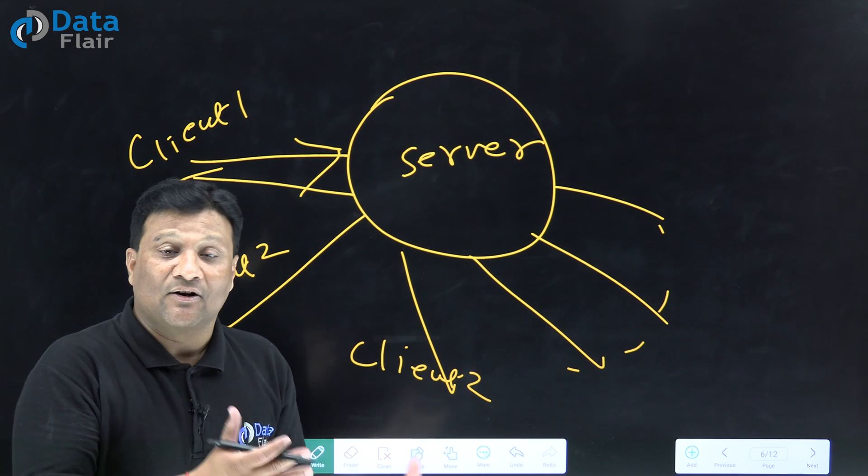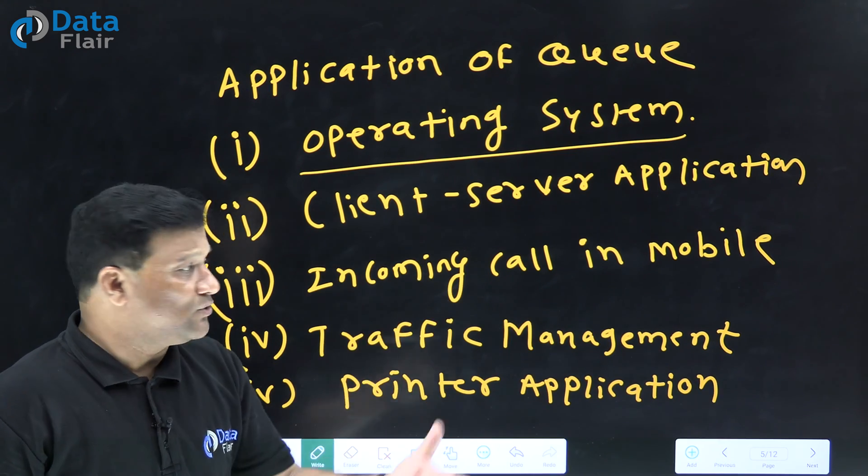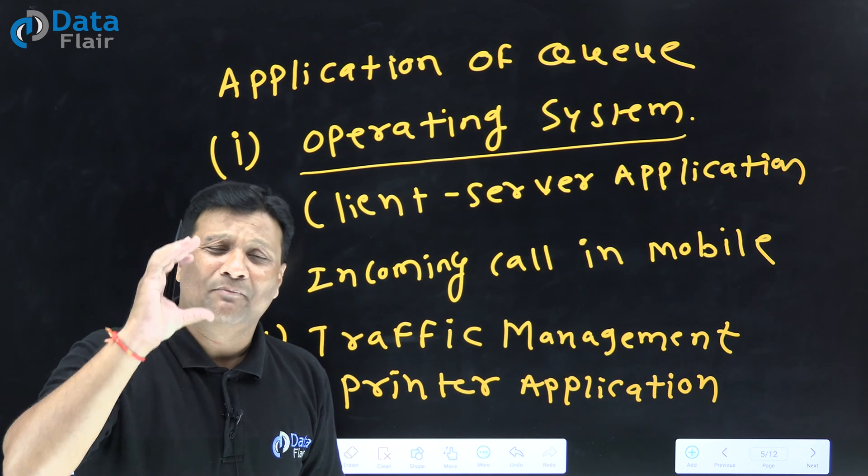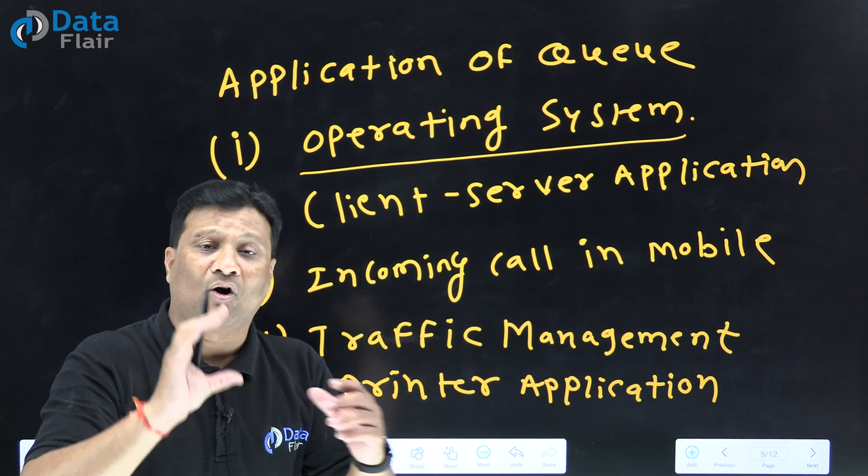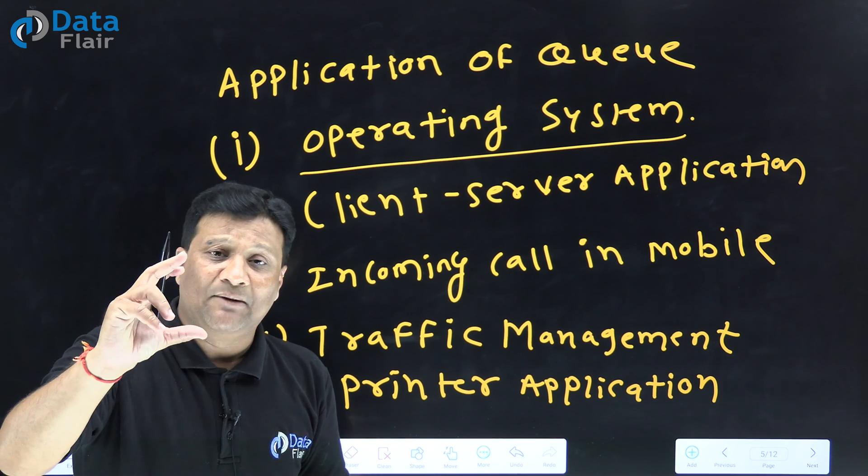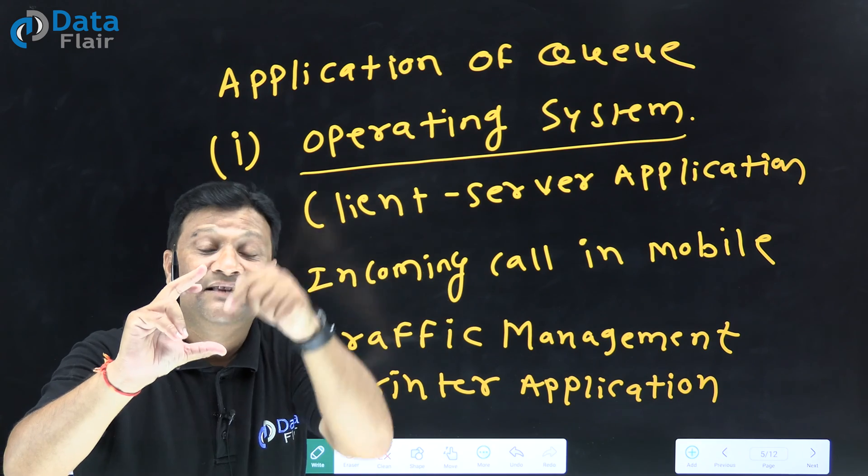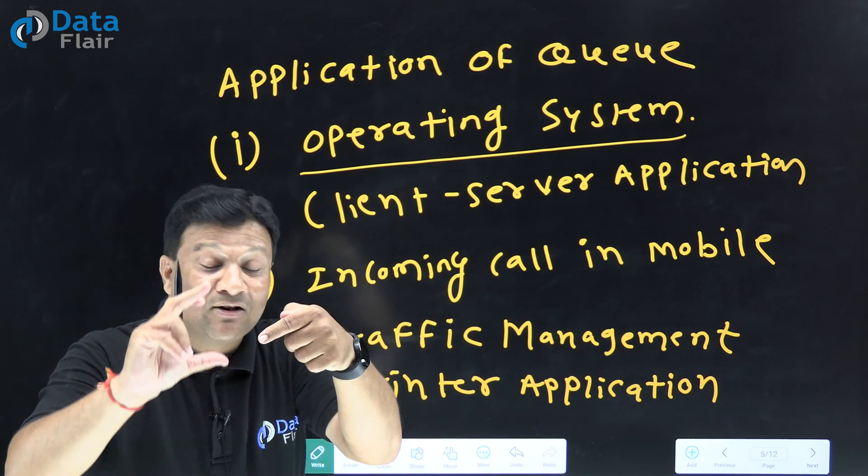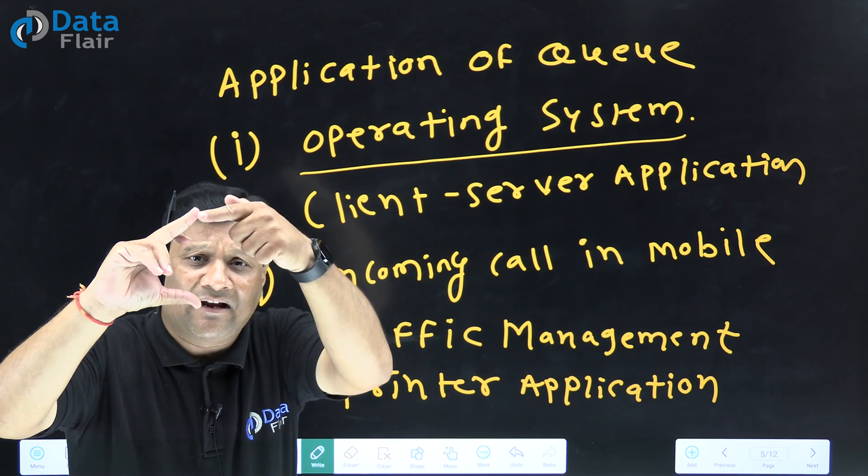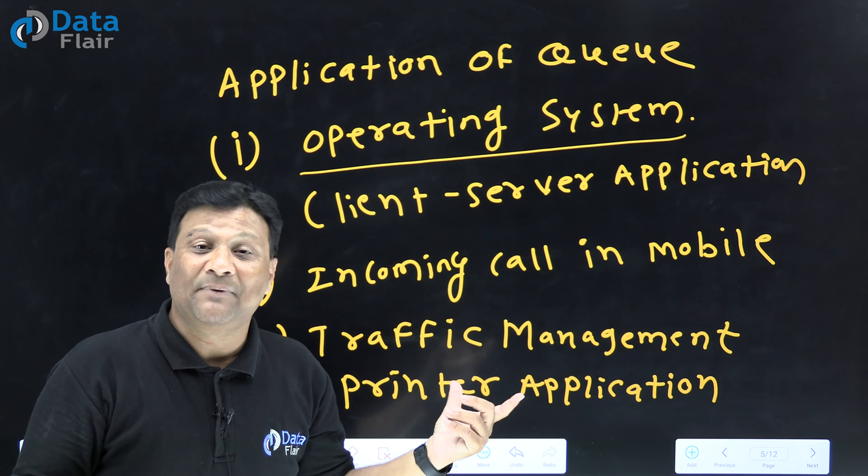The best example is your mobile application, communication device. Your mobile's messaging service and calling service maintain Queue concept. In your mobile, incoming calls have a limitation. Suppose your mobile's incoming call limit is 20. If 20 calls come and the last call makes 21, then automatically the first call that came will be removed - this is the concept of Queue implemented in mobile calling applications.